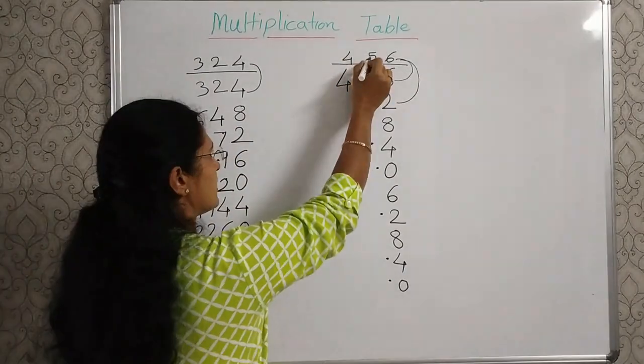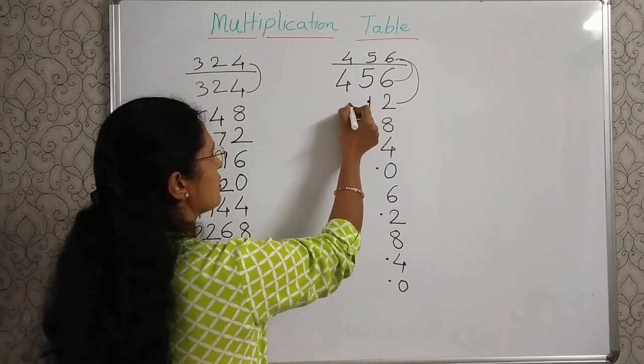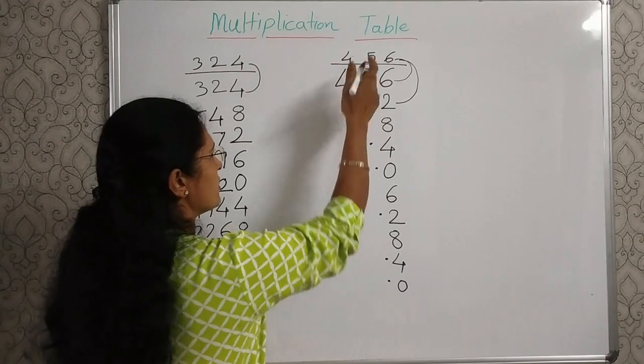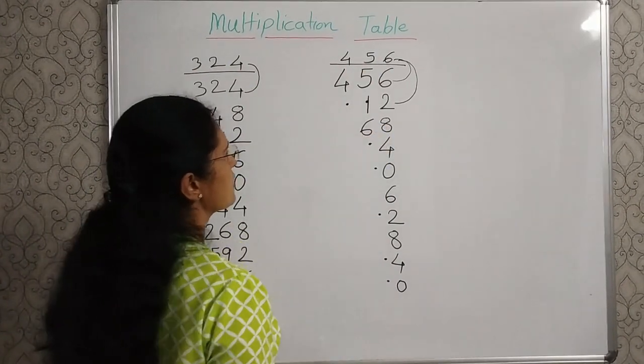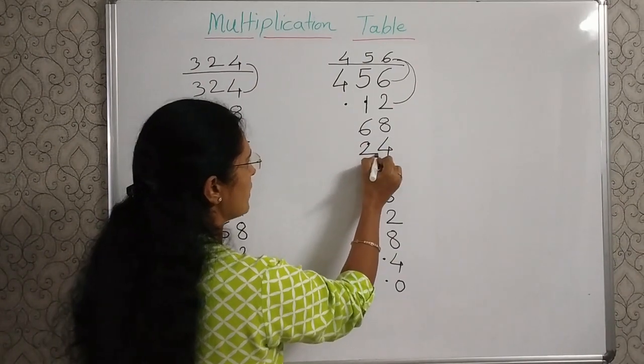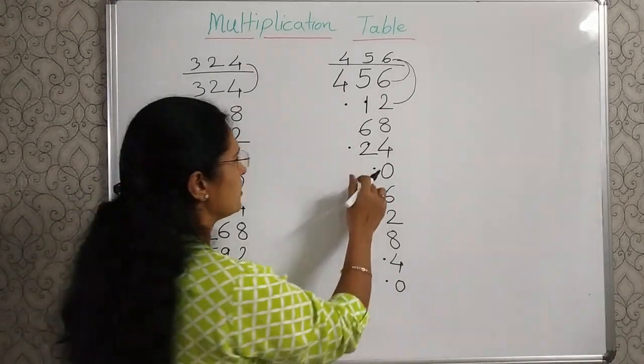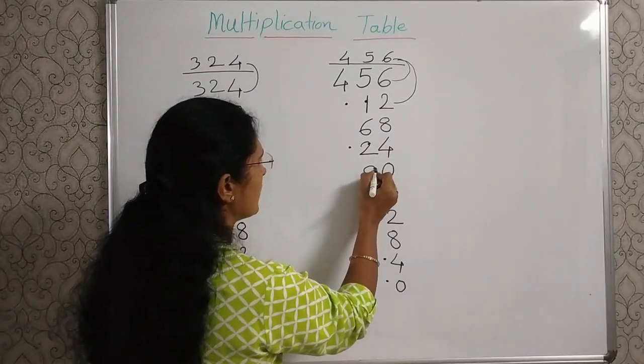5 plus 5, 10, and this one, 11. So 1 here, carryover 1. 1 plus 5, 6. 6 plus 5, 11, and this one, 12. Carryover 1. 2 plus 5, 7, and this dot, 8.